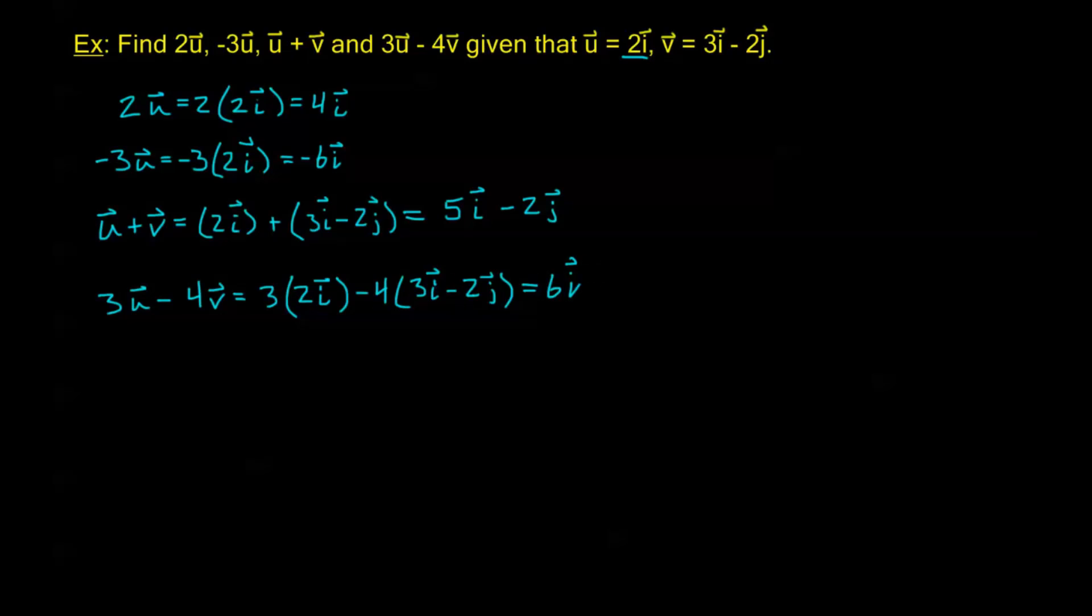Then I can distribute this 4, so I have minus 4 times 3, which is minus 12I, and minus 4 times minus 2, which is a positive 8J. So this gives me a total of -6I plus 8J.